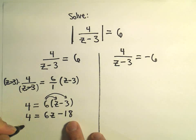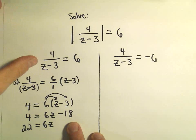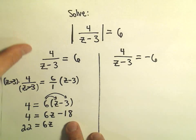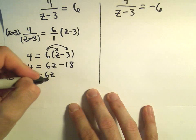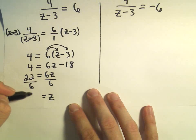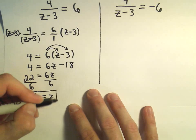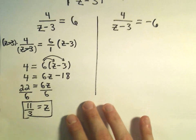I'll add 18 to both sides, so that'll give me 22 equals 6z. And now I can simply divide both sides by 6. One of my solutions, if I reduce, since they're both even, I could use 11 thirds. So z equals 11 over 3 would be one solution.